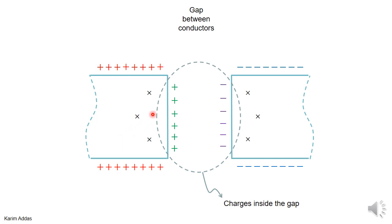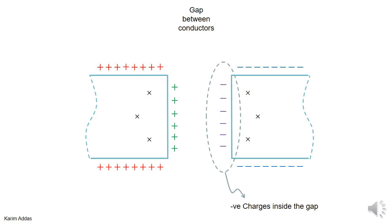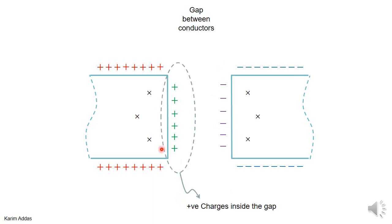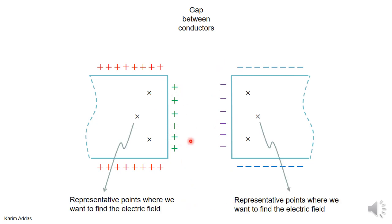Let's look in more detail at that gap. In the gap, there are some positive charges on the left and some negative charges on the right. We'll examine what happens at six representative points — three on the left side of the wire and three on the right side.